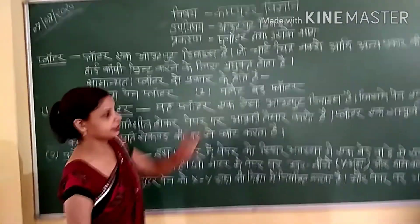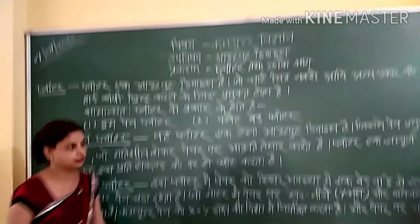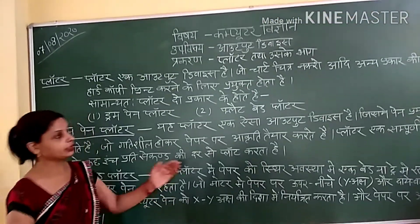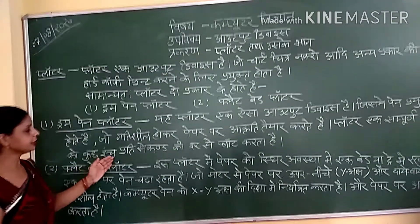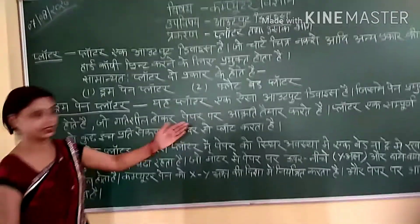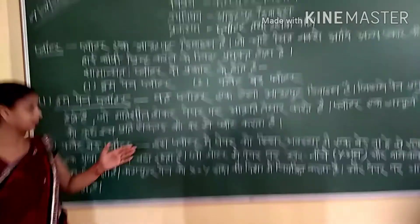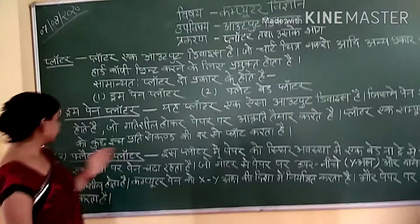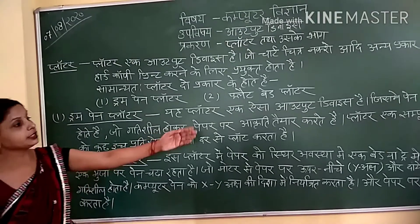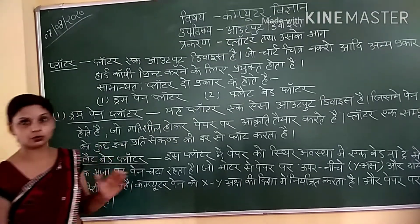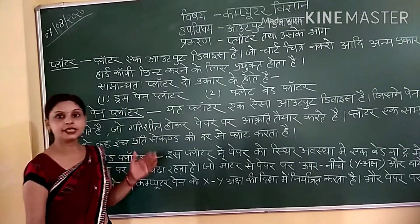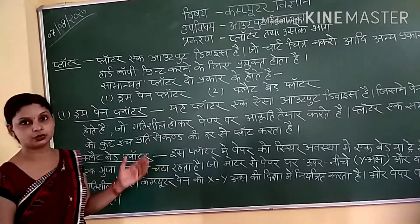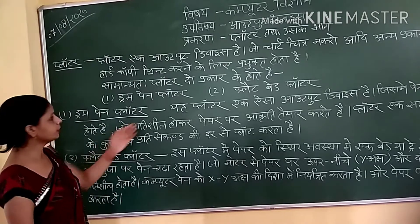Paper per aagriti diyaati hati hai. A simple chitri ko kuch inch per second ki darsse flaute kata hai. Kuch samimene hi kuch citri ko flaute kata hai. A simple chitri ko yaani puri chitri ko kuch inch per second ki darsse flaute kata hai.